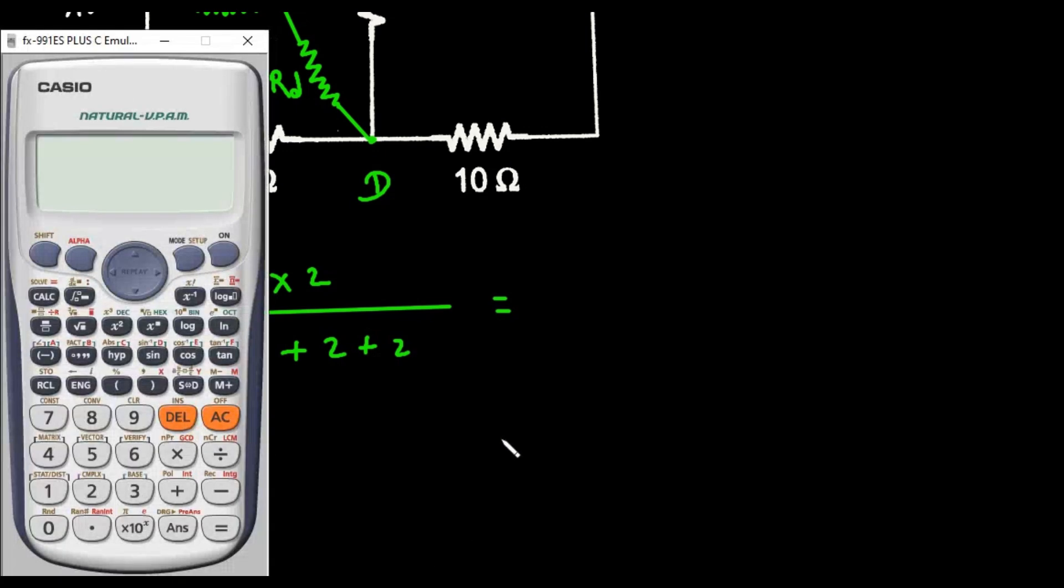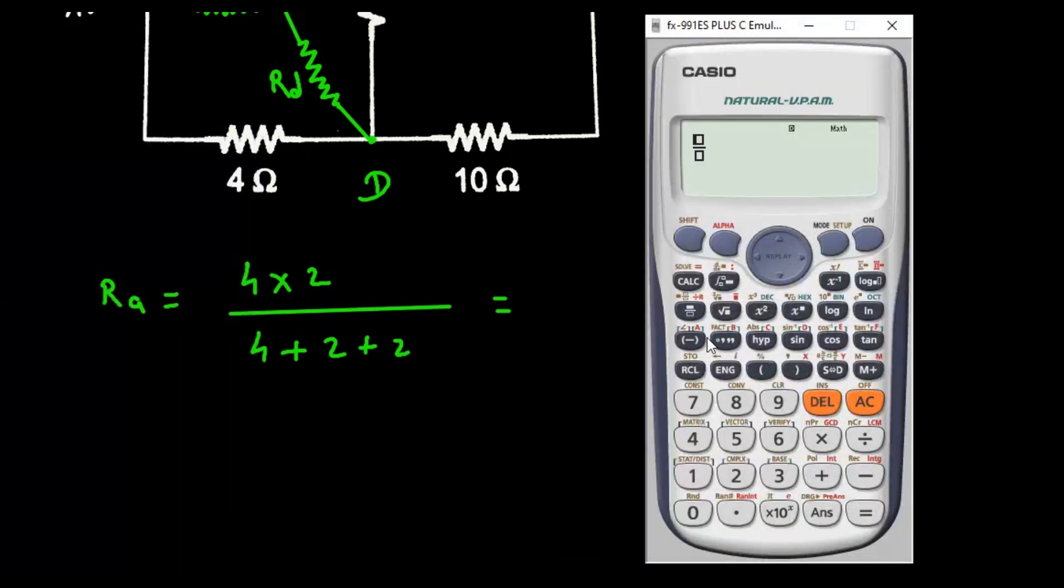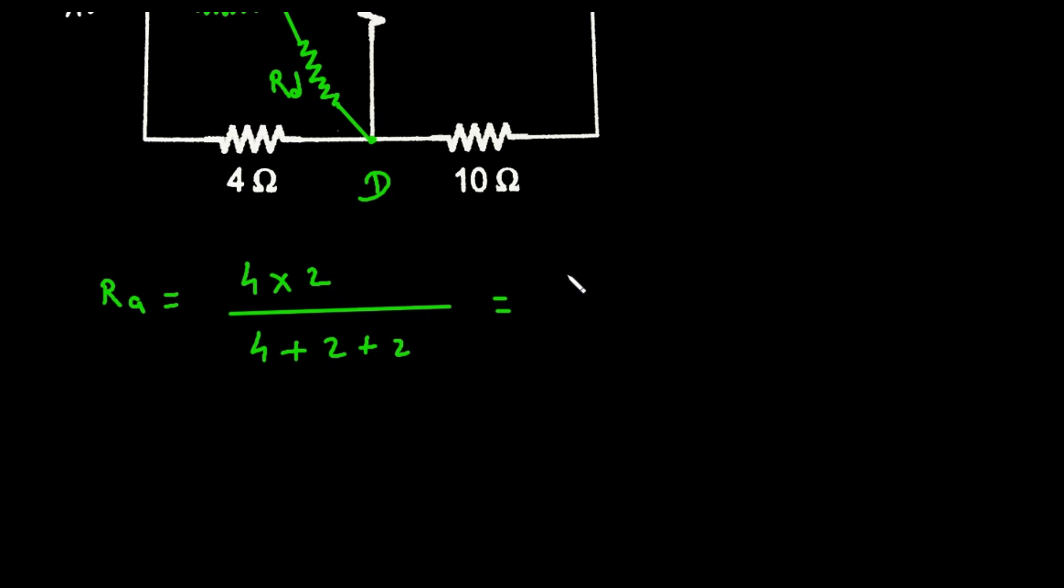If we solve this we get 4 into 2 divided by 4 plus 2 plus 2. So it is simply 1 ohm.